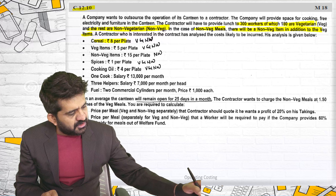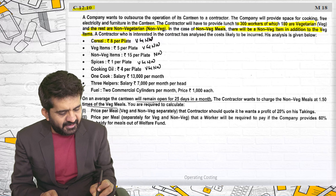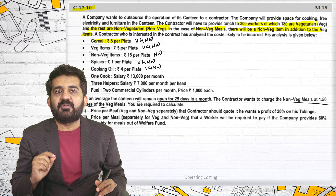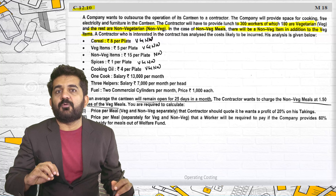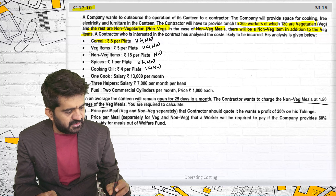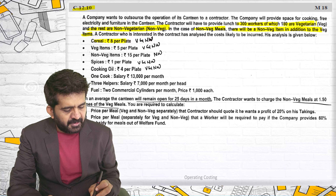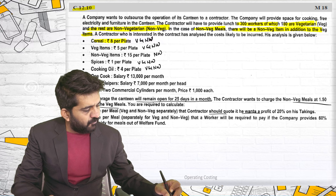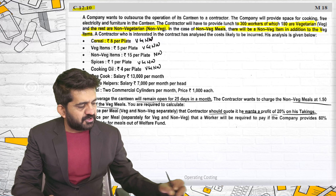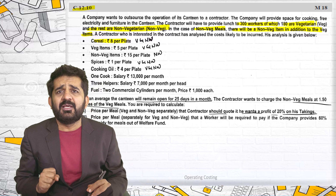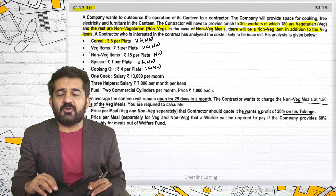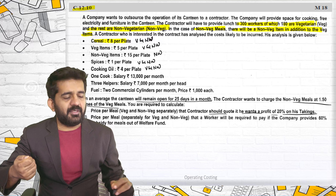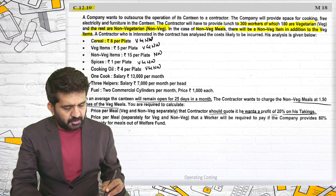The contractor wants to charge non-veg meals at 1.5 times the veg meals. So if the price of a veg dish is ₹100, non-veg will be ₹150. We are required to calculate price per meal — veg and non-veg separately — if the contractor wants a profit of 20% on his takings. I'll find out total cost for manufacturing veg and non-veg meals, then find selling price by adding 20% profit.